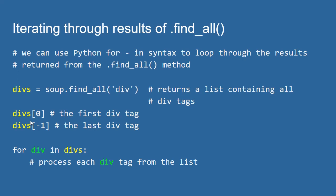Because divs is a list, I can use the for-in syntax to loop through each individual tag. So if I say 'for div in divs', where divs is the list of div tags and div is the variable holding each tag one at a time, I can process each div tag inside the loop — maybe searching for a specific text value or attribute value for further processing.